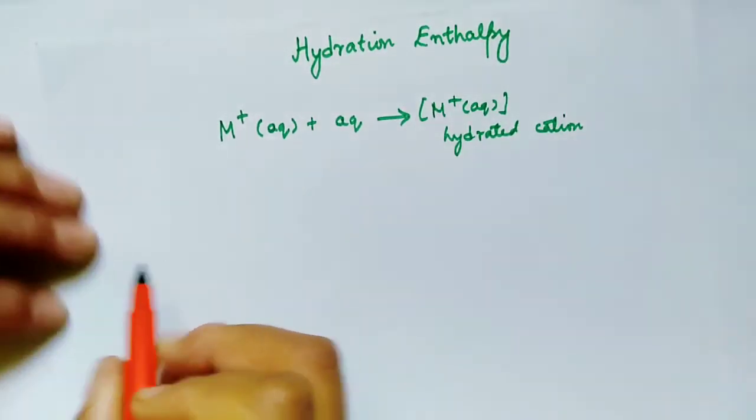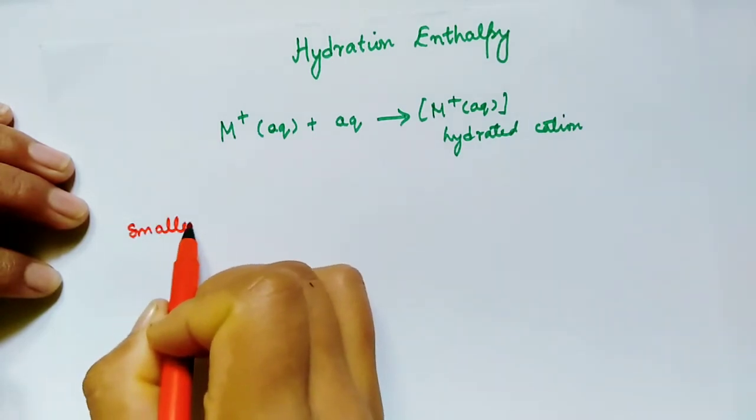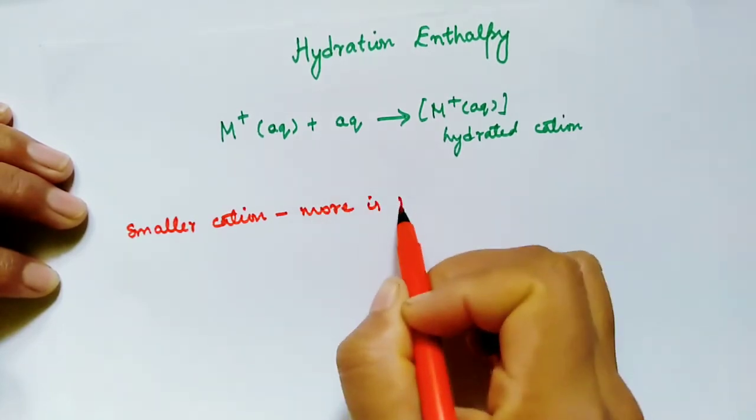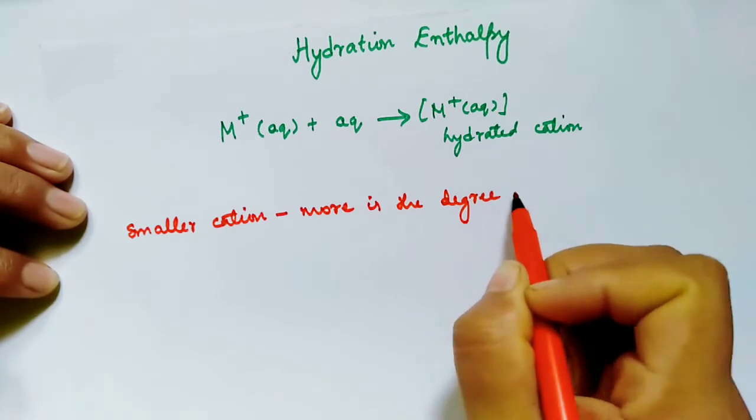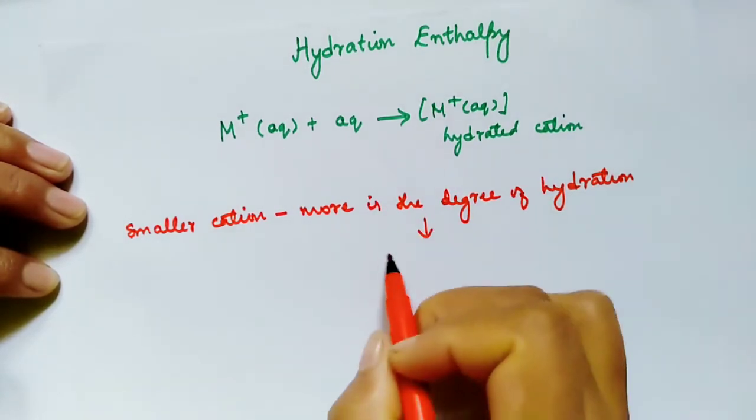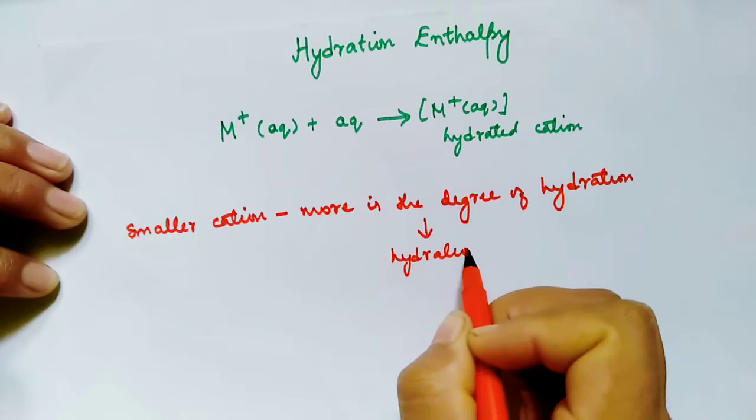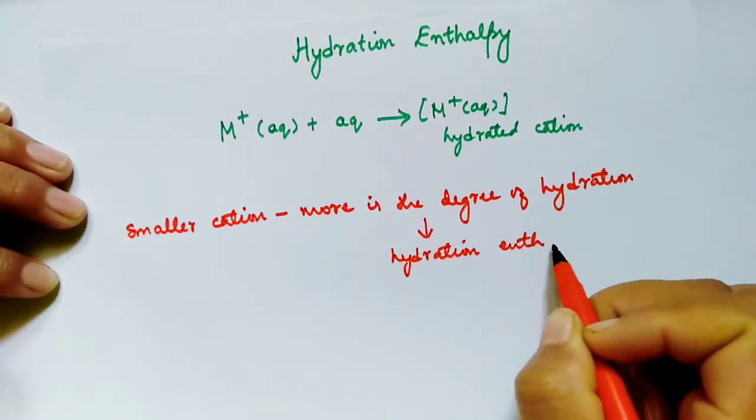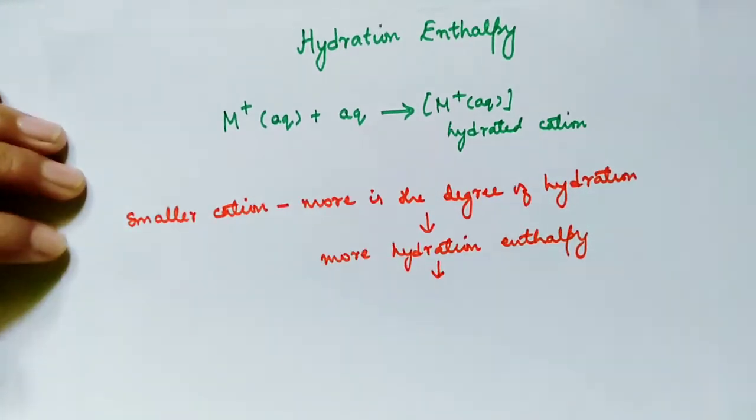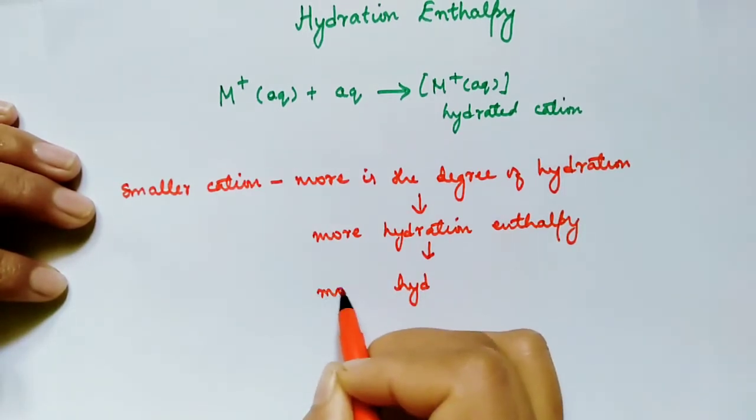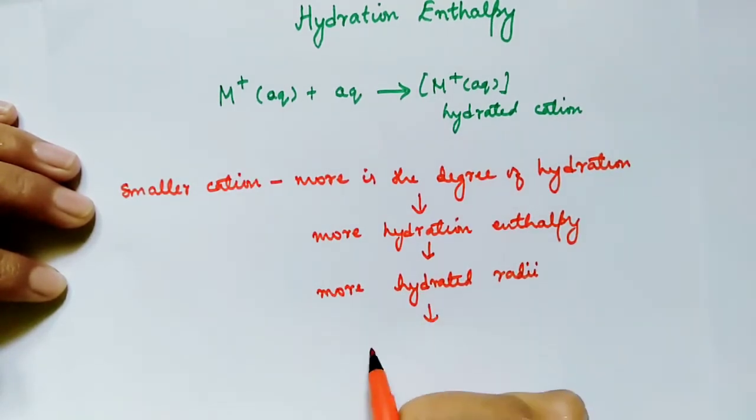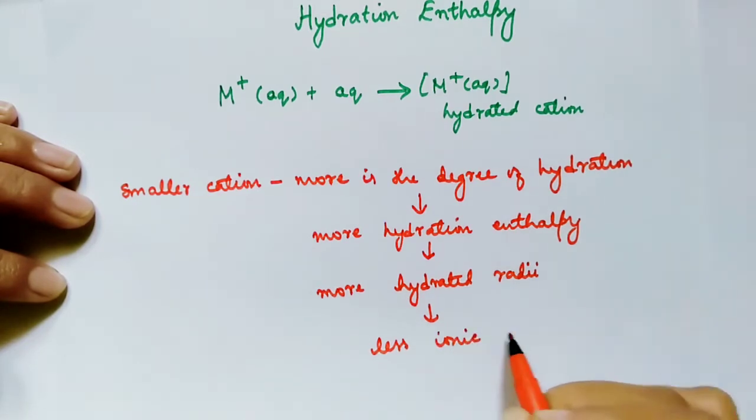Remember that the smaller the cation, the more is the degree of hydration. More degree of hydration implies more hydration energy or hydration enthalpy, and also more hydrated radii, but less ionic conductance.